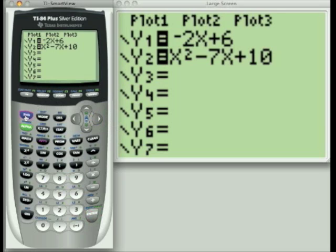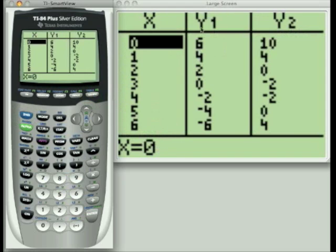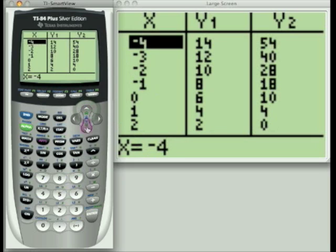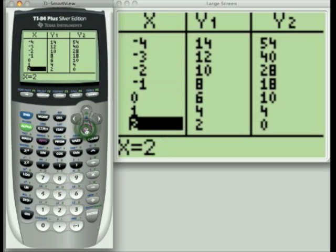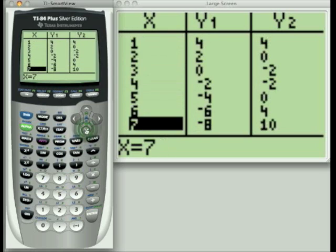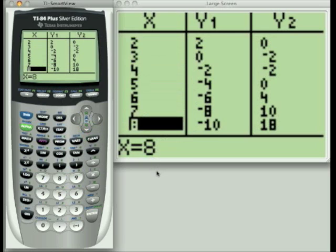And if I go back to my table by going second graph, now I have the y-values for both equations. Now, a couple things about the table is if you want to look at values below 0 or above 6, you can use your arrow buttons to arrow up, or I could go back down if I wanted to. And you can see we could pick out a whole range of values that we want to look at.